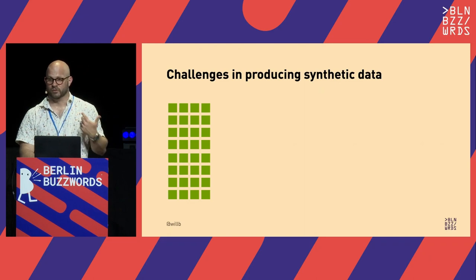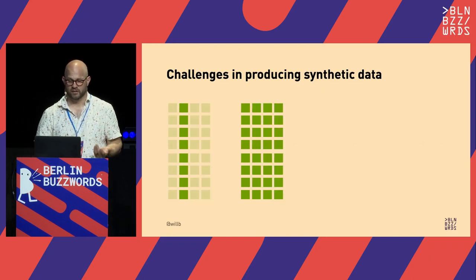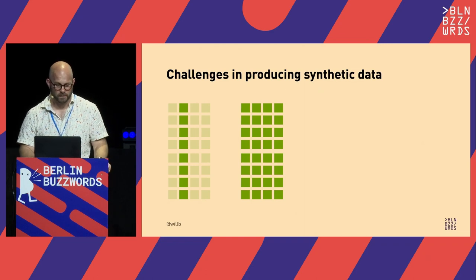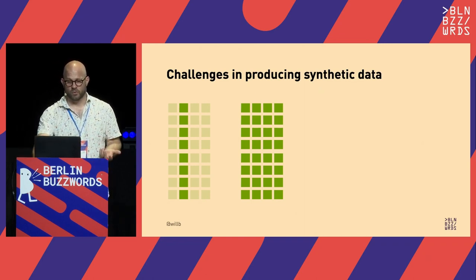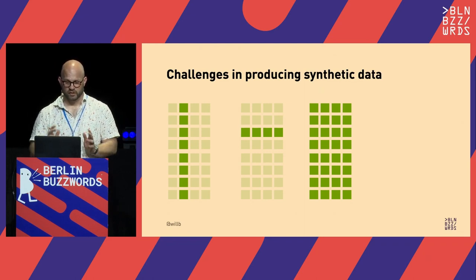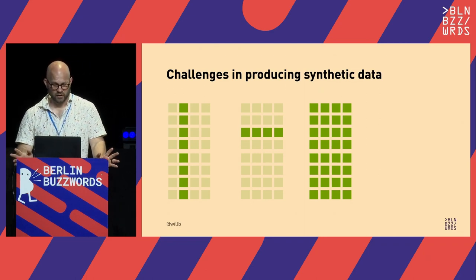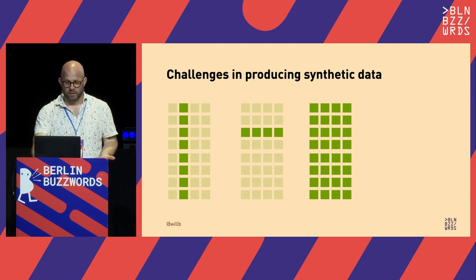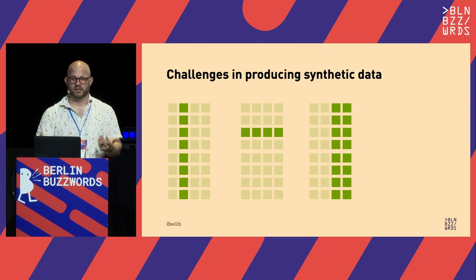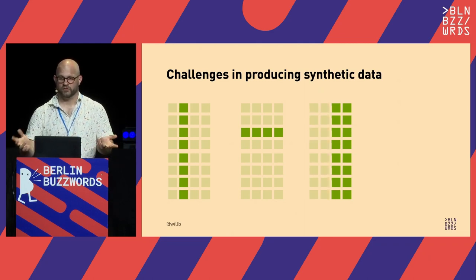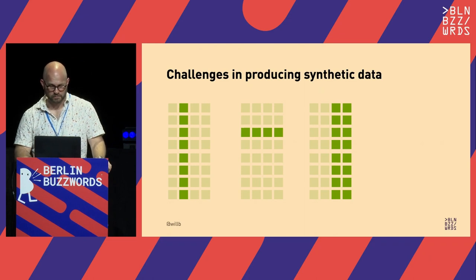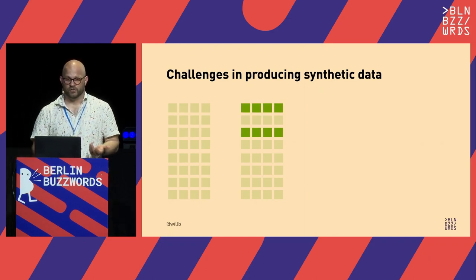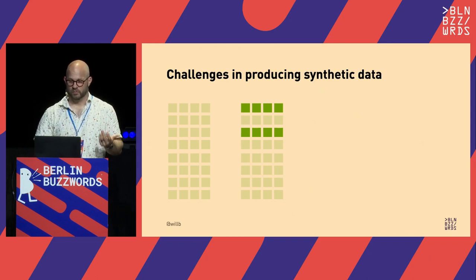For some applications, we really care about preserving the shape of columns — each feature should have the same distribution in synthetic data as in actual data; we want to preserve the marginal distributions. In some datasets, we want to preserve the shape of rows: our synthetic data should preserve correlations and constraints between columns. In some applications, we care about the shape of subsets of columns — our synthetic data should inhabit a joint distribution in the same way our actual data do.